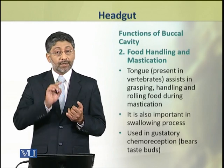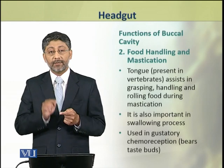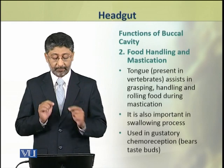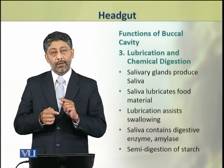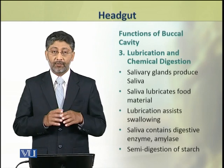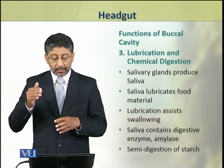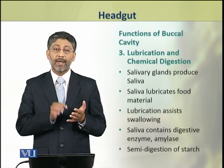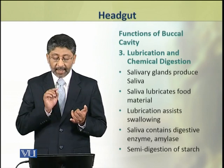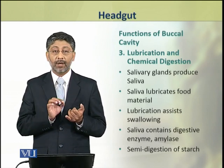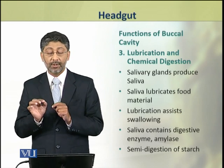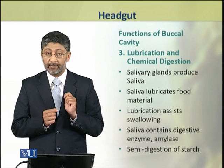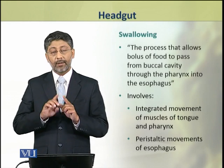In addition, the tongue also helps in food selection because it has taste buds which keep the gastrointestinal receptors. The buccal cavity also has salivary glands which produce saliva. Saliva lubricates the food material. This lubrication assists in swallowing as well as in partial digestion of starch foods, because saliva contains an enzyme called salivary amylase.